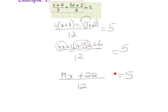Now with the equals sign it's all about balancing — we want x on one side and everything else on the other. But this is a fraction: (19x + 22) divided by 12. To get rid of a fraction we get rid of the bottom number, so since we're dividing by 12 we multiply by 12.